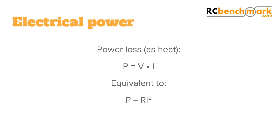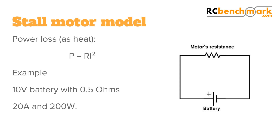Power is defined as voltage multiplied by current. Using Ohm's law, we can rewrite the power formula to P equals R times I squared. All the power that goes through a resistor is converted to pure heat. Using our previous example, applying 10 volts to an equivalent resistance of 0.5 ohm will create 200 watts of heat. Since it is a small motor, all this heat will make the motor very hot. This is why stalling a motor is not good for both the battery and the motor.